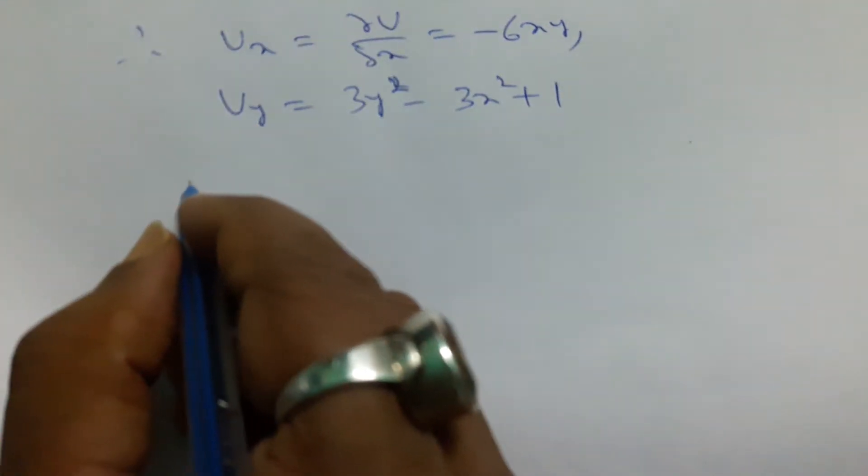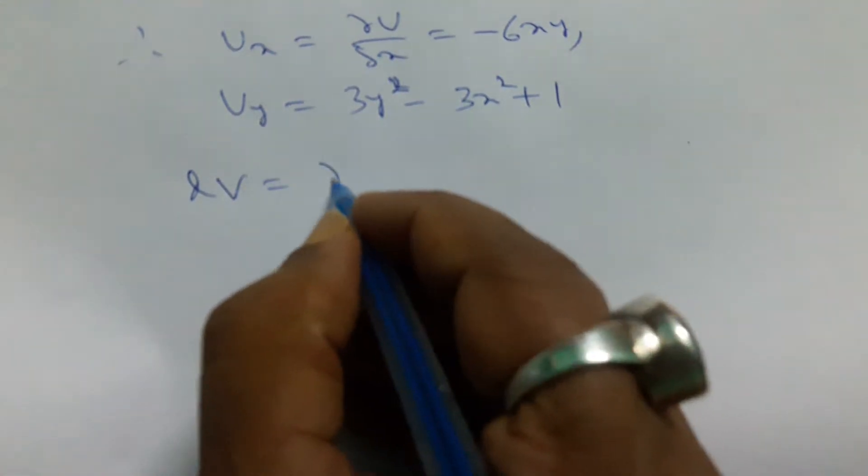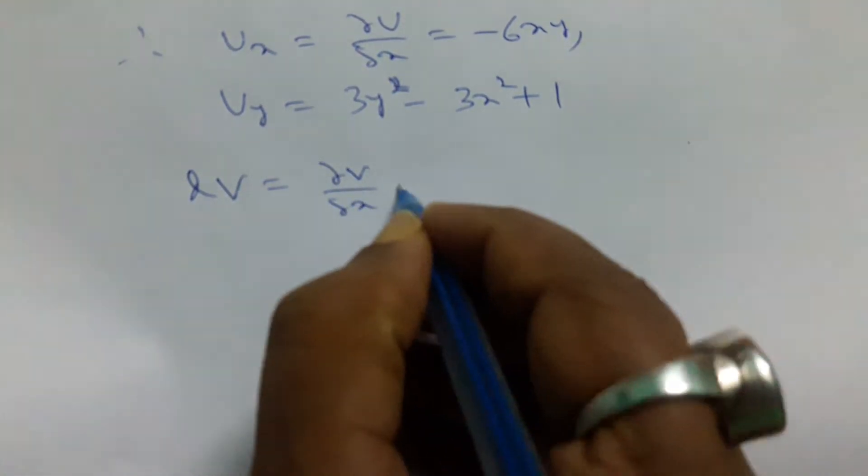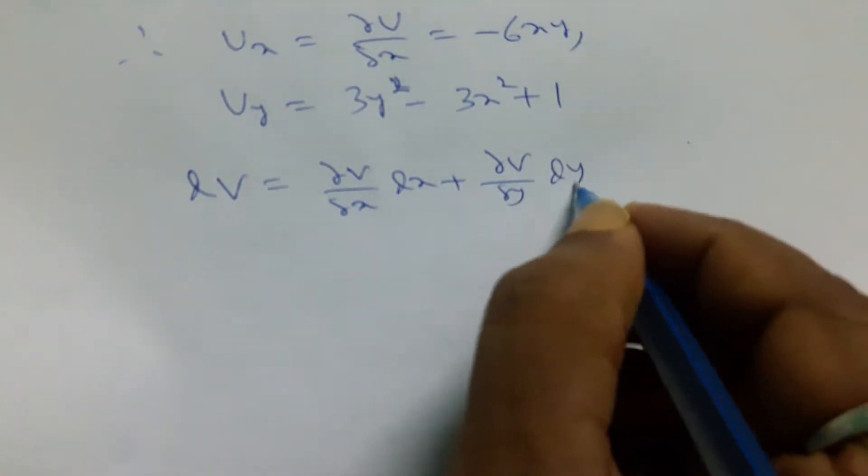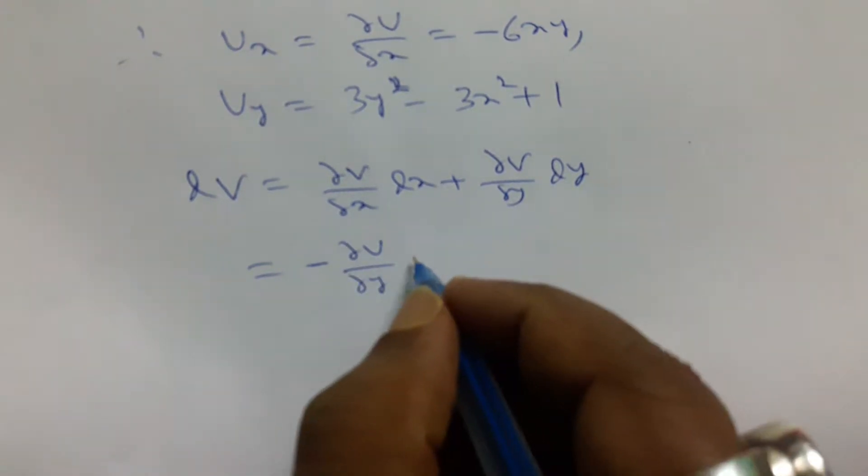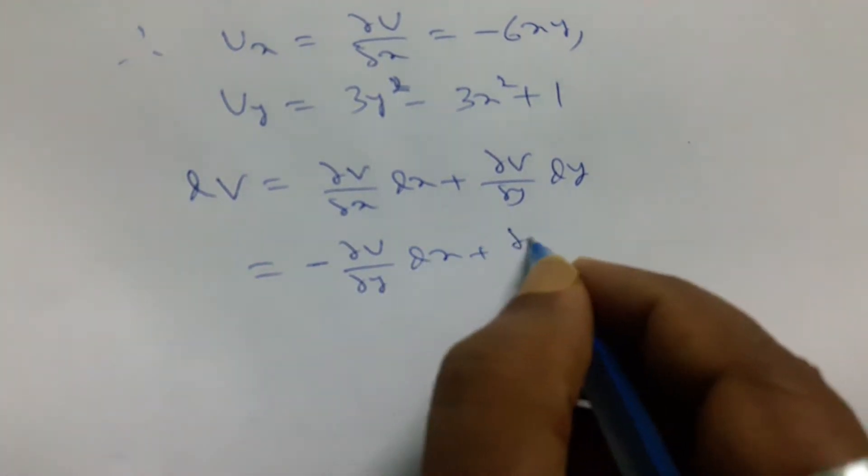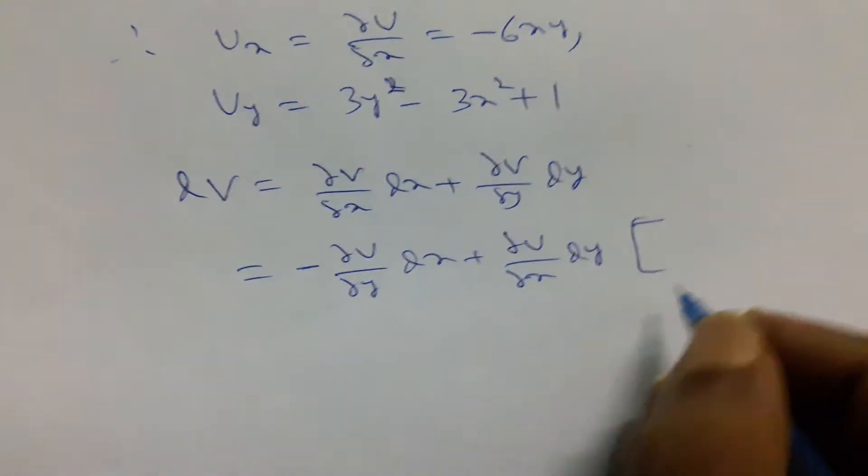Now dv equals to del v del x dx plus del v del y dy is equal to minus del u del y dx plus del u del x dy by CR equations.